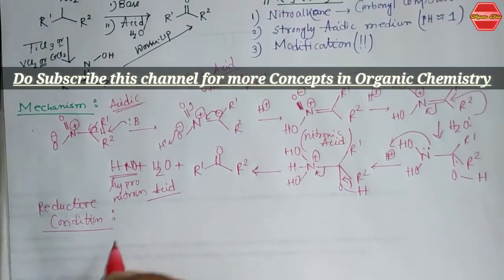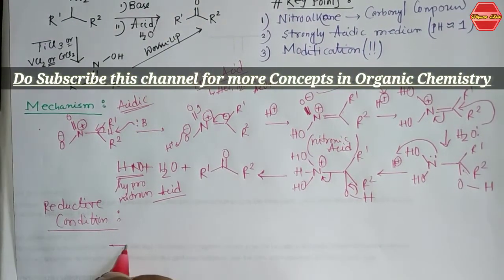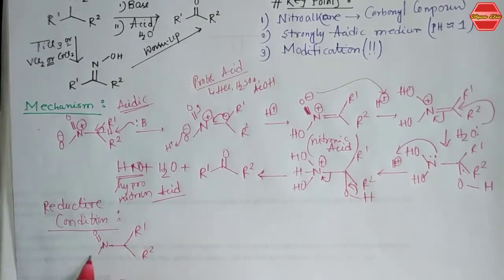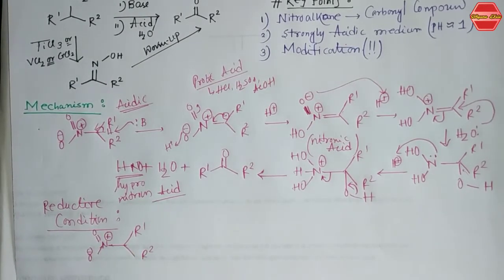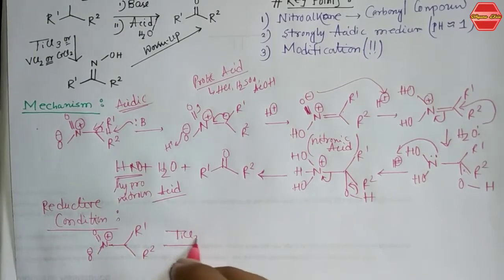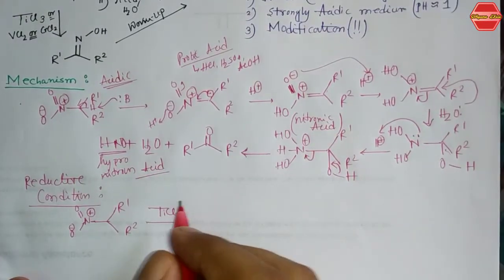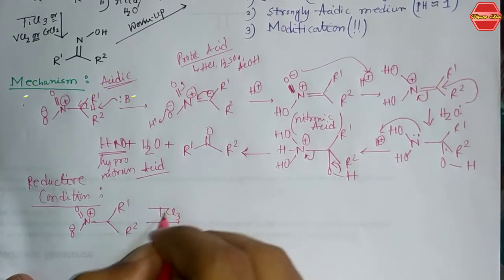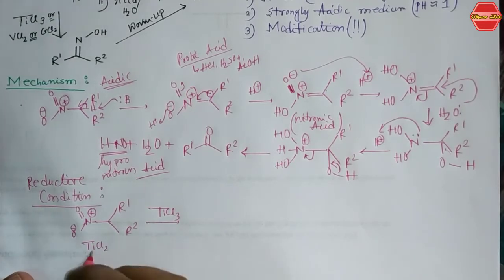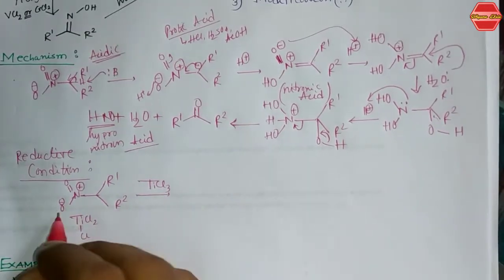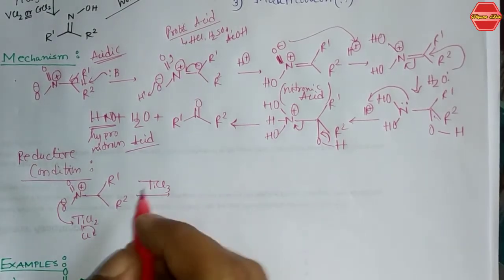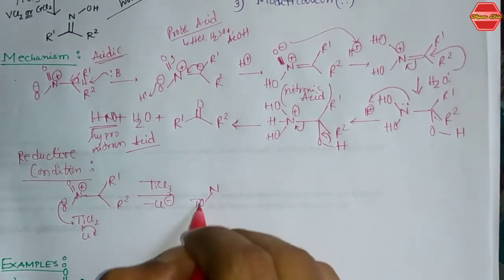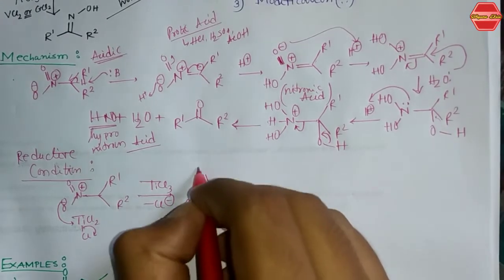Under reductive conditions, we again start with R1 and R2 on a carbon bearing a N=O⁻ and a positive charge on nitrogen. Using TiCl₃, the O⁻ directly attacks the titanium center and one Cl⁻ leaves the system. We can write this as TiCl₃ losing one Cl⁻, forming an O–TiCl₂ linkage, with a double bond O⁺ on nitrogen, giving the species with R1 and R2.